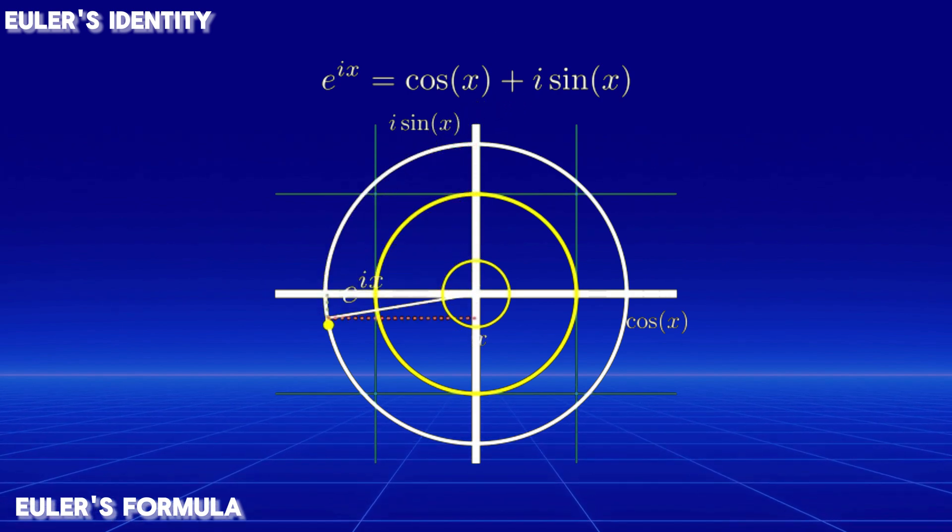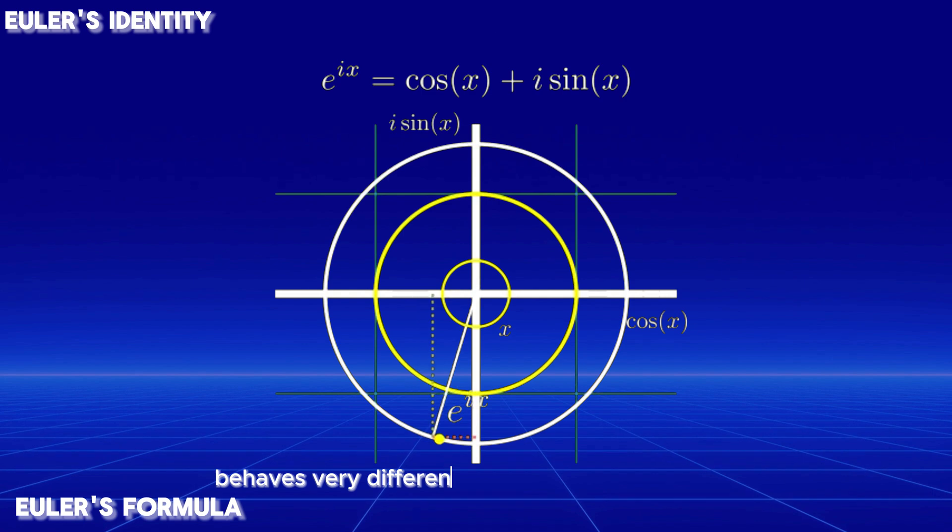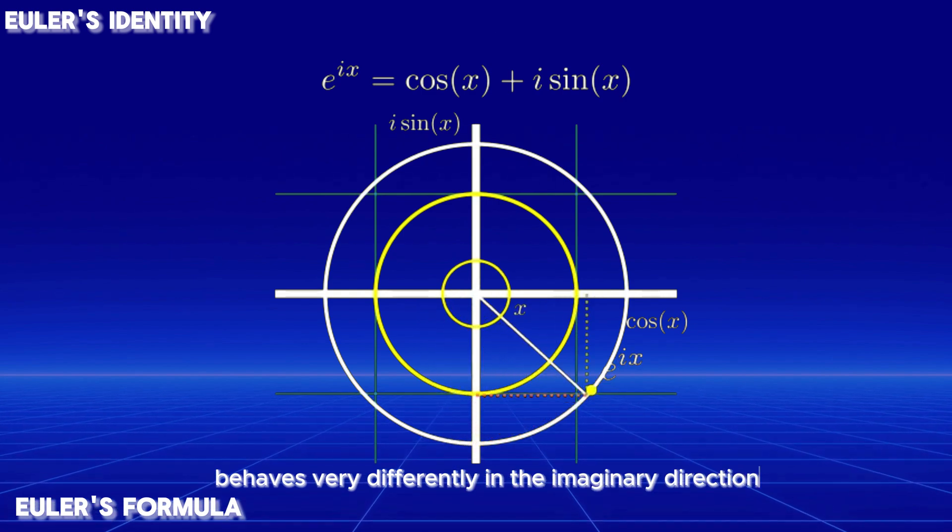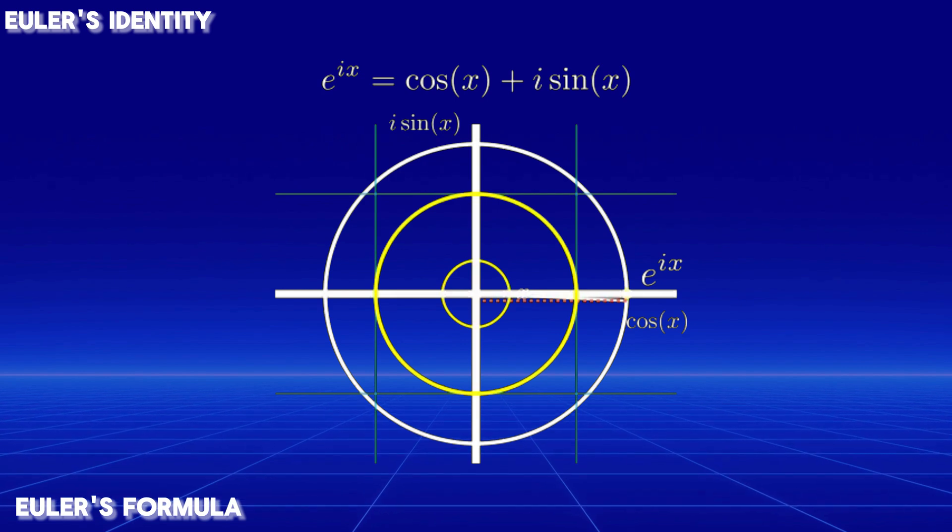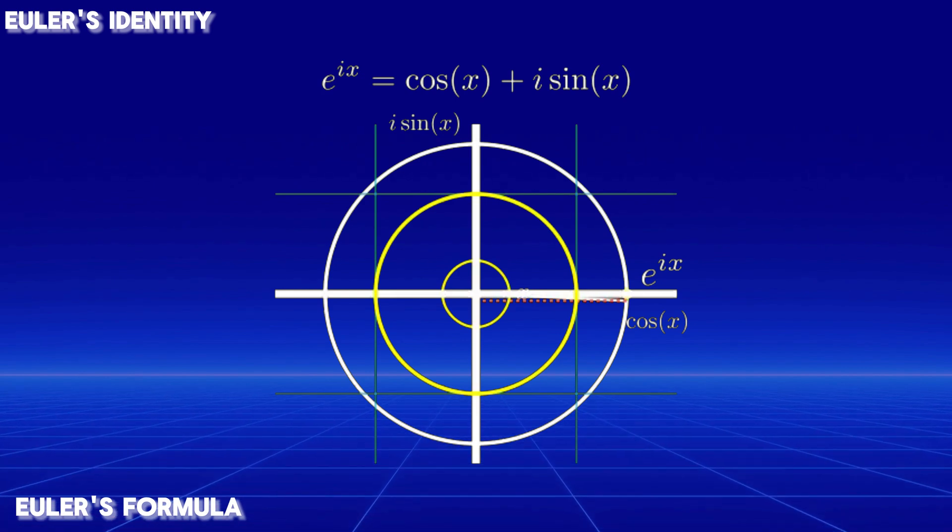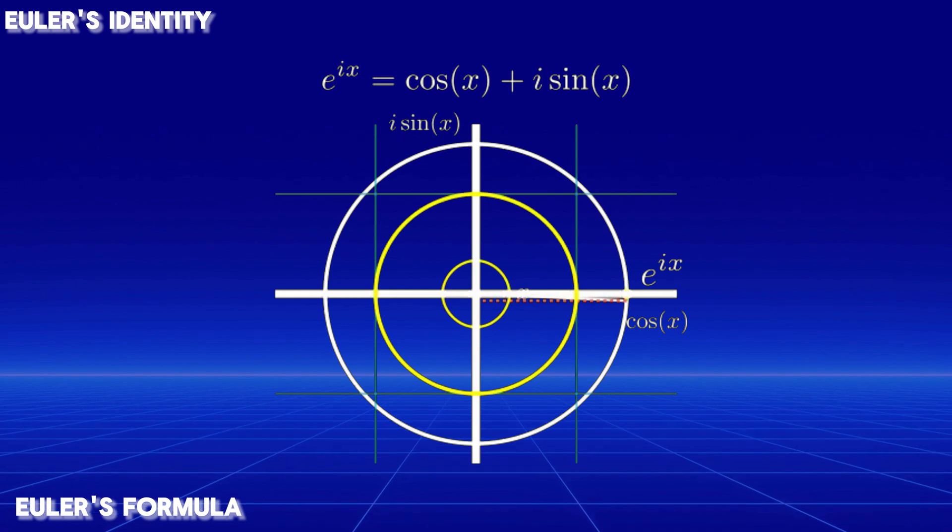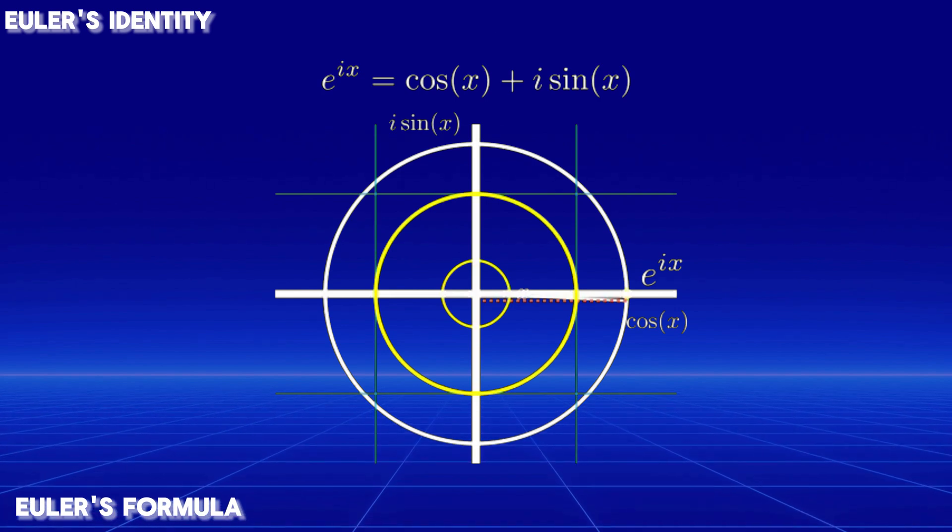This means that exponential growth behaves very differently in the imaginary direction. It does not just get bigger, it rotates. This unexpected link between exponential functions and circular motion is what makes Euler's formula so fascinating.